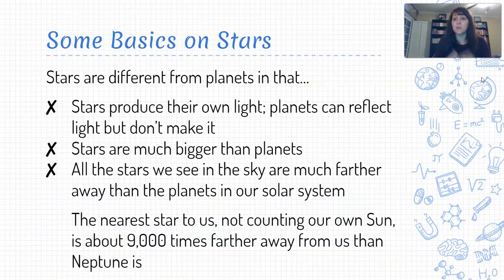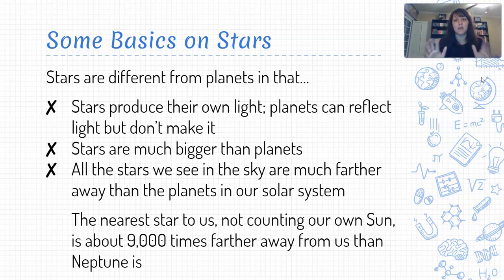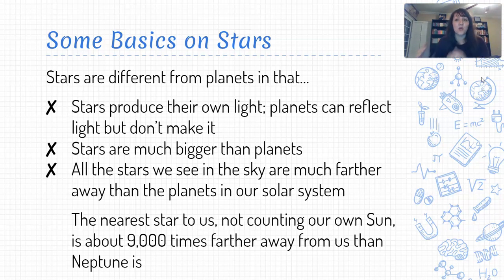First, some basic facts on stars. When we look up in the sky, we can see stars and planets — both are celestial bodies, but they have some significant differences. The first big difference is that stars produce their own light. Planets do not produce light; we're able to see planets because light from a star is reflecting off the planet. Typically stars are also a lot bigger than planets because they're doing this whole light manufacturing, nuclear fusion, crazy process. Stars are bigger, but they don't look bigger from our perspective because they're way, way farther away from Earth than the planets in our solar system.